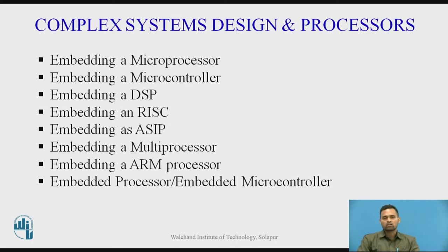An embedded processor has a specific ability which embeds those capabilities into a single system. The key capabilities of embedded processors include: context switching and low latency time, where the embedded processor plays a major role; a 32-bit RISC processor used for higher accuracy and faster computation; and the capability of 32-bit or 64-bit atomic addition and multiplication. For these important capabilities, we embed the processors.